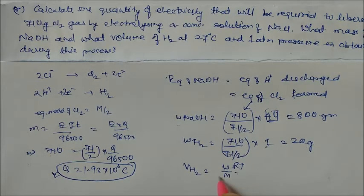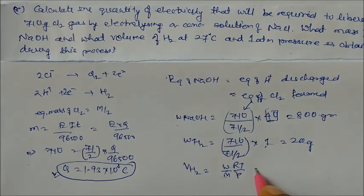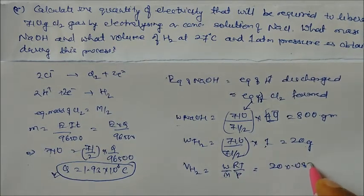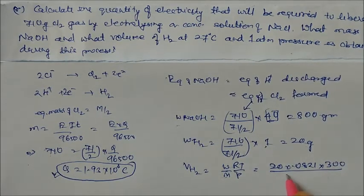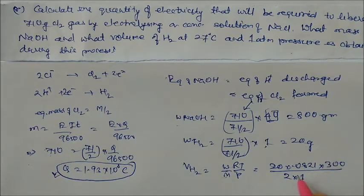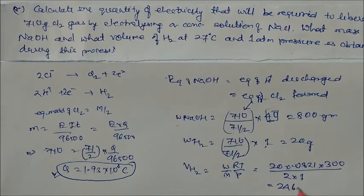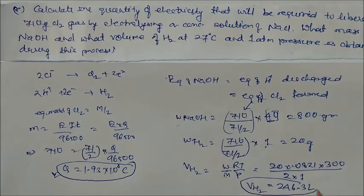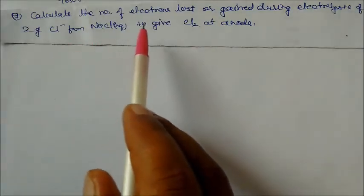Volume of H₂ using ideal gas law: V = (m / M) × RT / P = (20/2) × 0.0821 × 300 / 1 = 246.3 liters. This is the volume of hydrogen released.